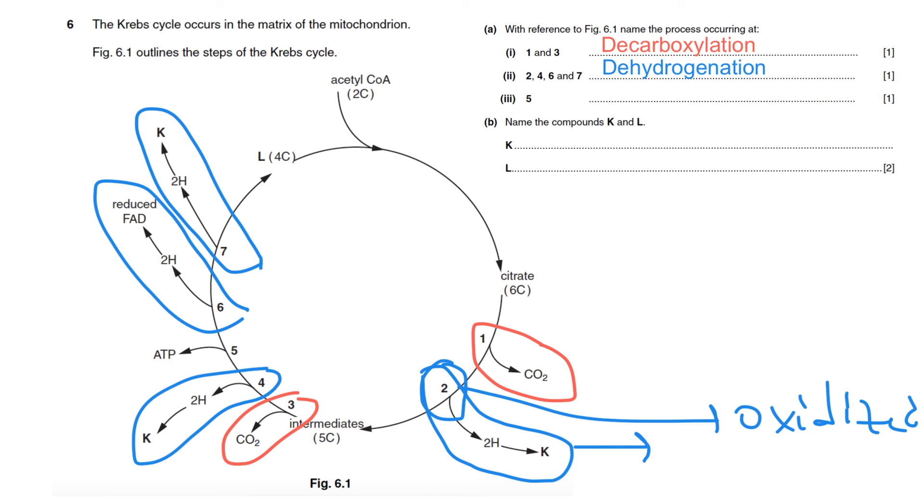Okay, what happens at number 5? Let's check out. ATP is produced. But you have to be careful here. The question asks you the name of the process. So you cannot just say energy is released or ATP is produced. We have to say that it's substrate level phosphorylation.